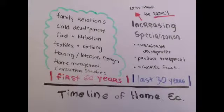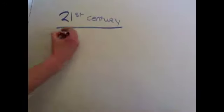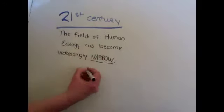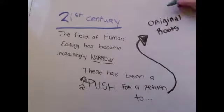For example, the traditional subject of family relations has evolved into courses such as social problems or family counseling. Now that human ecology has become increasingly narrow, there has been a push to return to the field's original holistic roots.